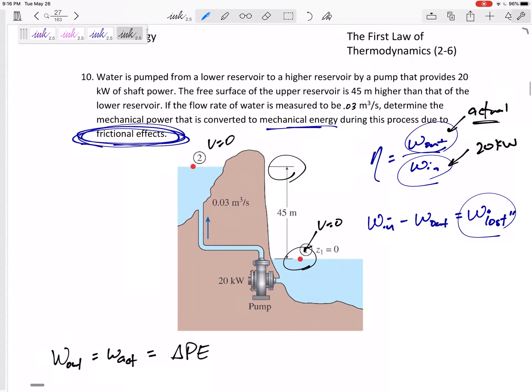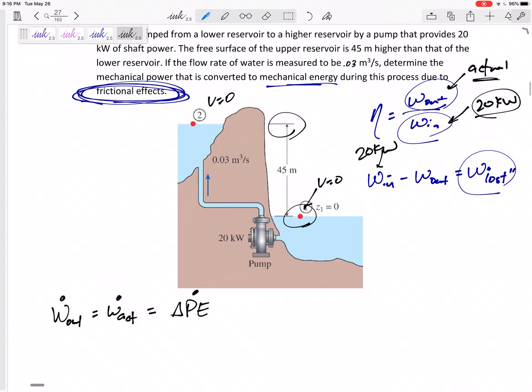All right, we're looking at, let's see, this is 20 kilowatts. We're looking at a power. So this is kind of a W dot or a PE dot, which would be M dot G H2 minus H1. Or really just this change in height right here, which is 45 meters.